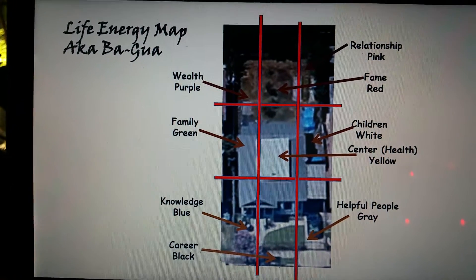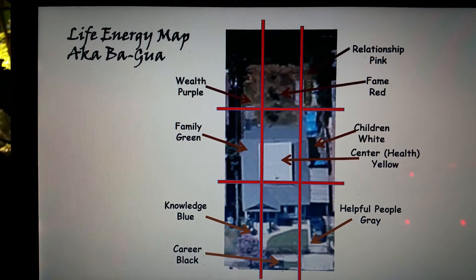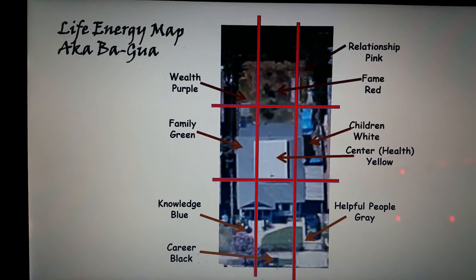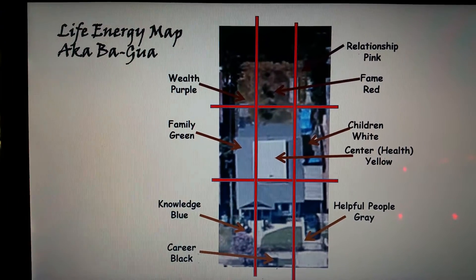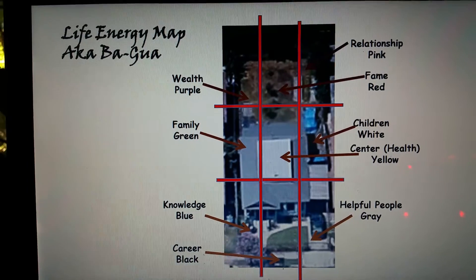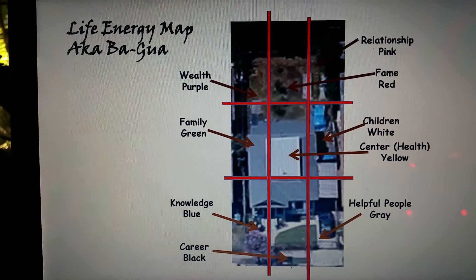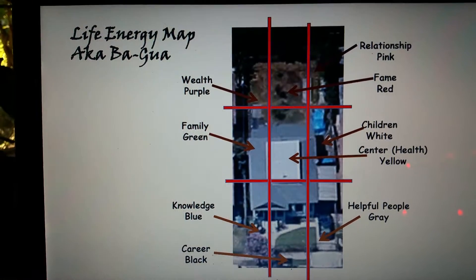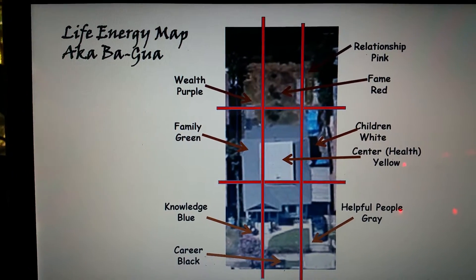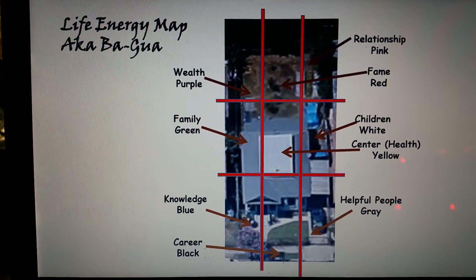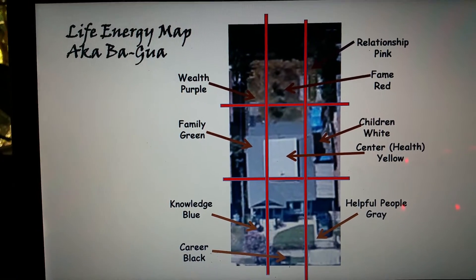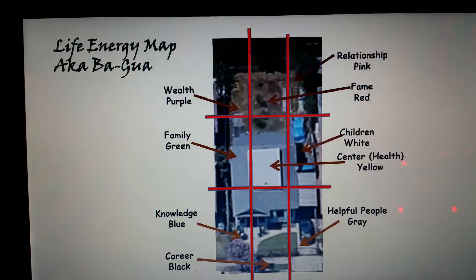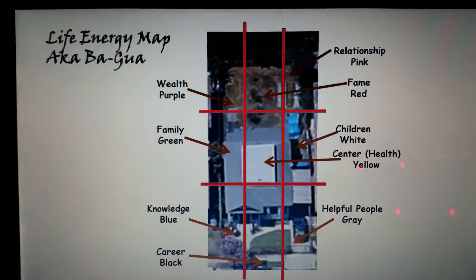If you go up to Google, or Google Earth, you can usually find an overview of your property. You can take a snapshot of that and create exactly what I've created here — the life energy map, also known as the Bagua.